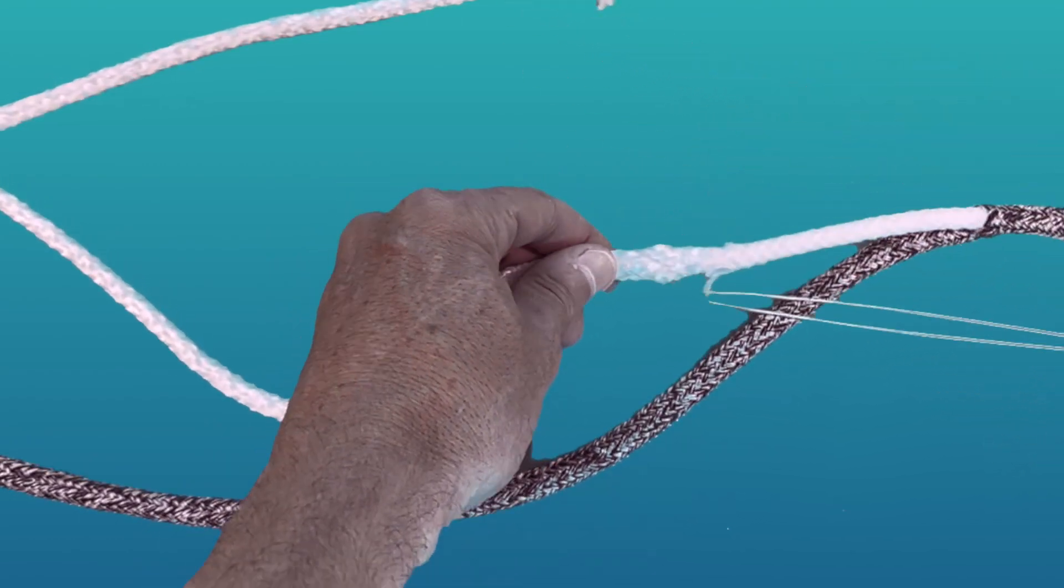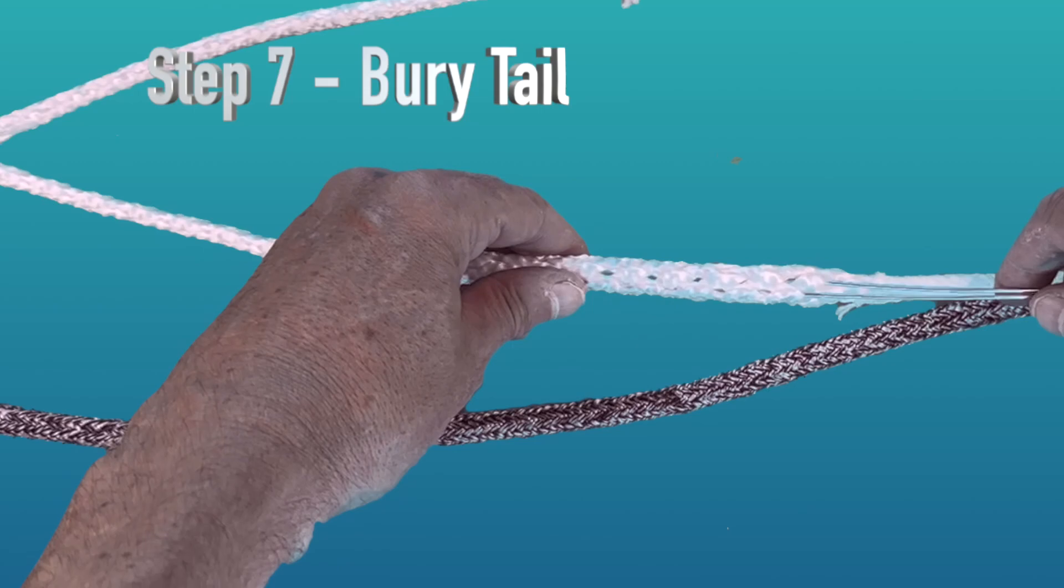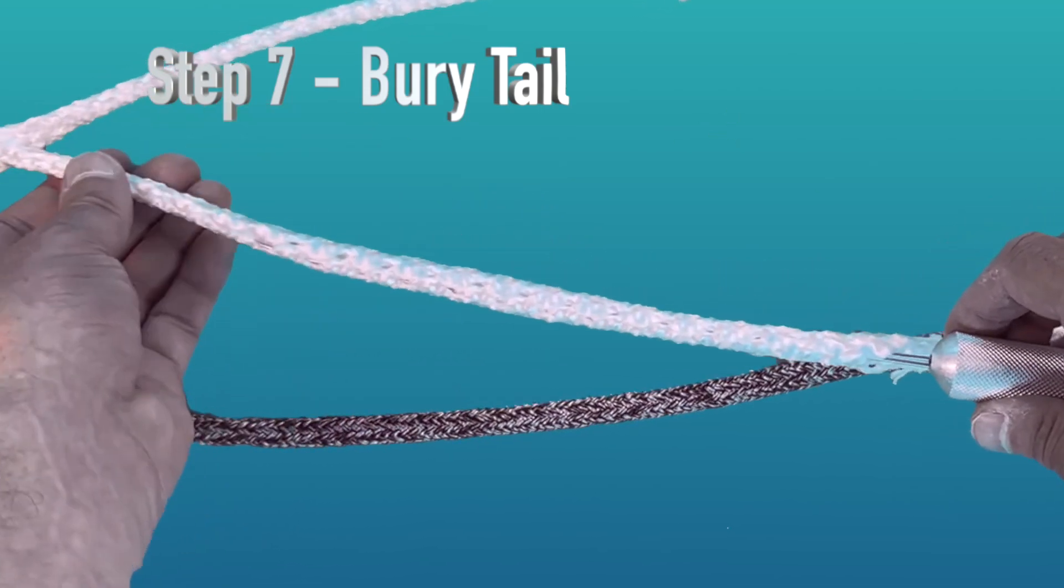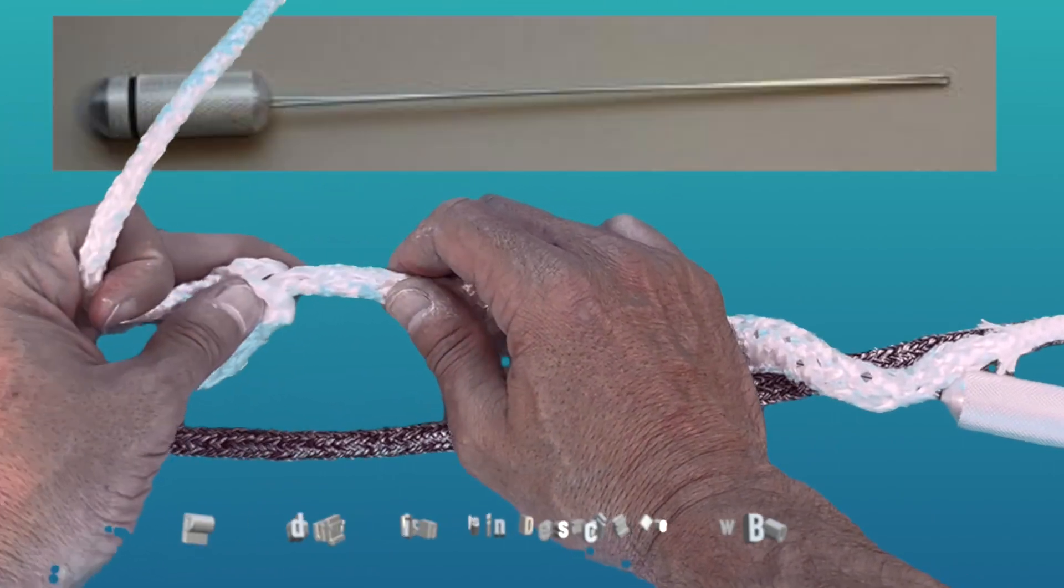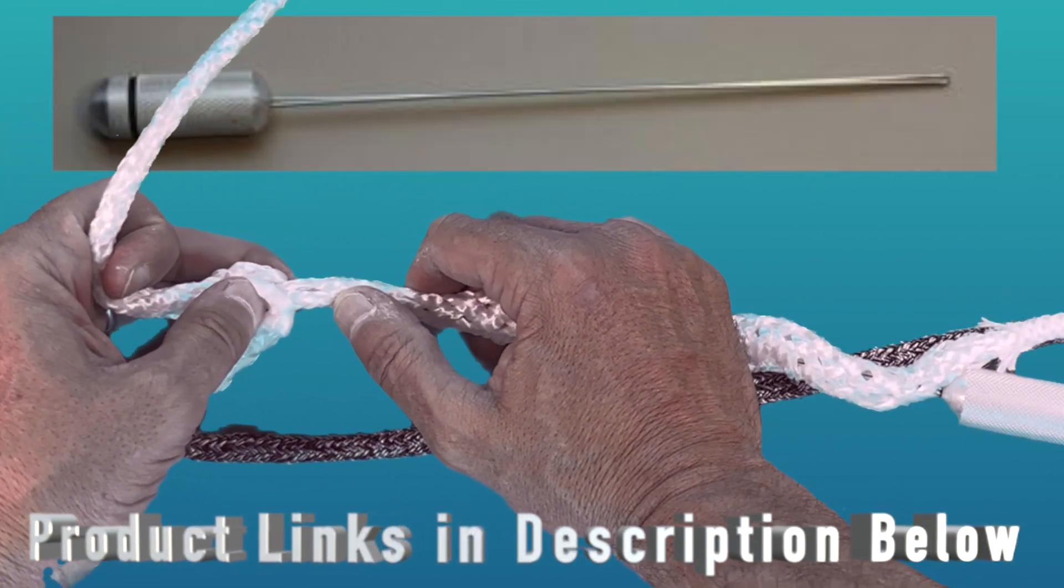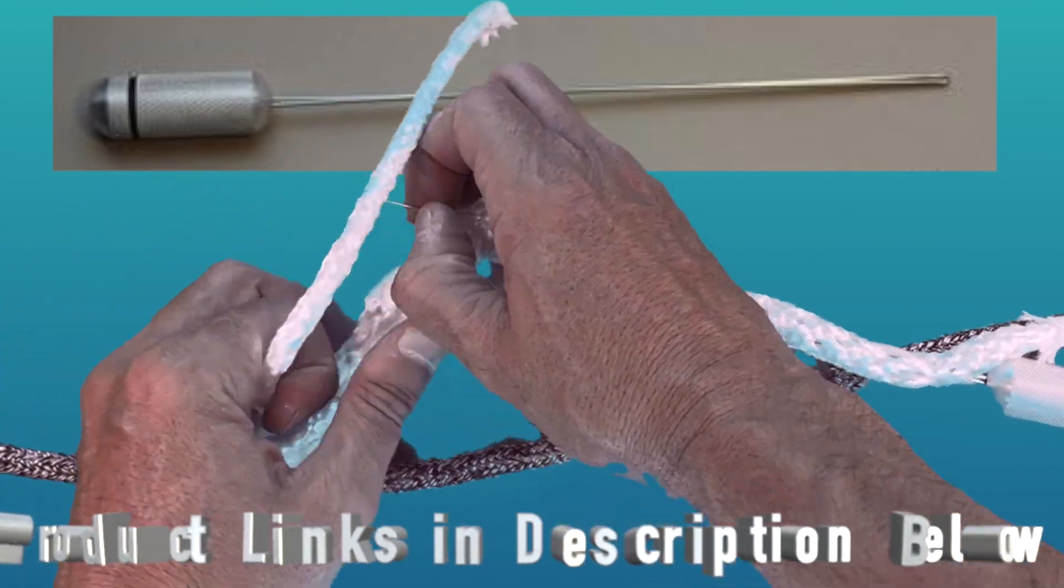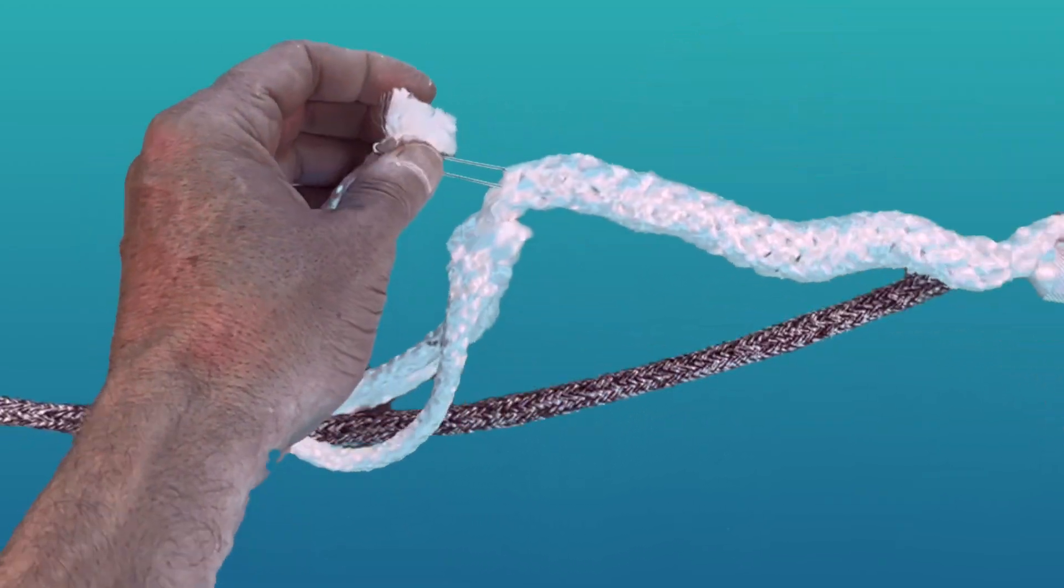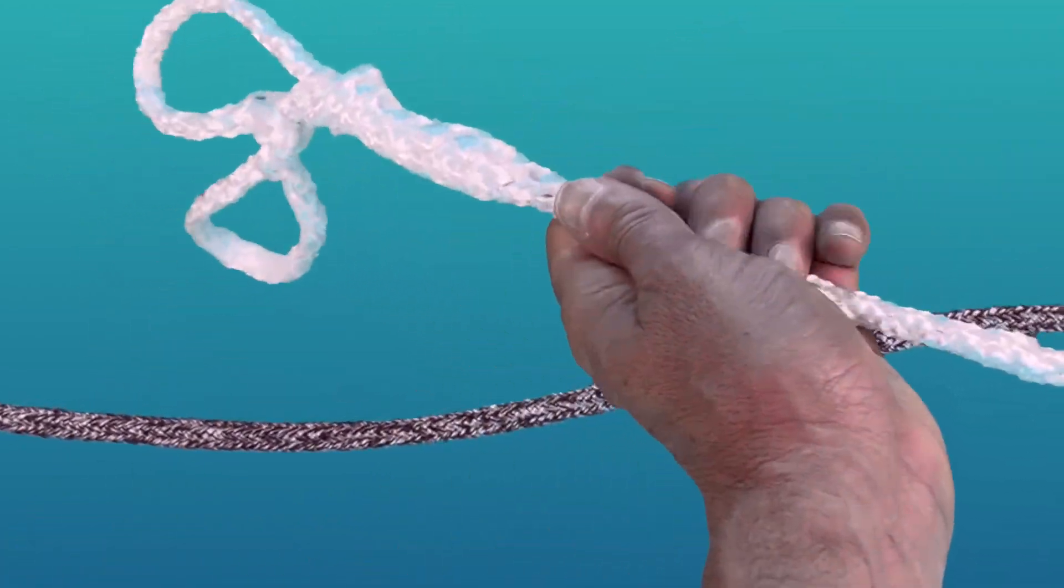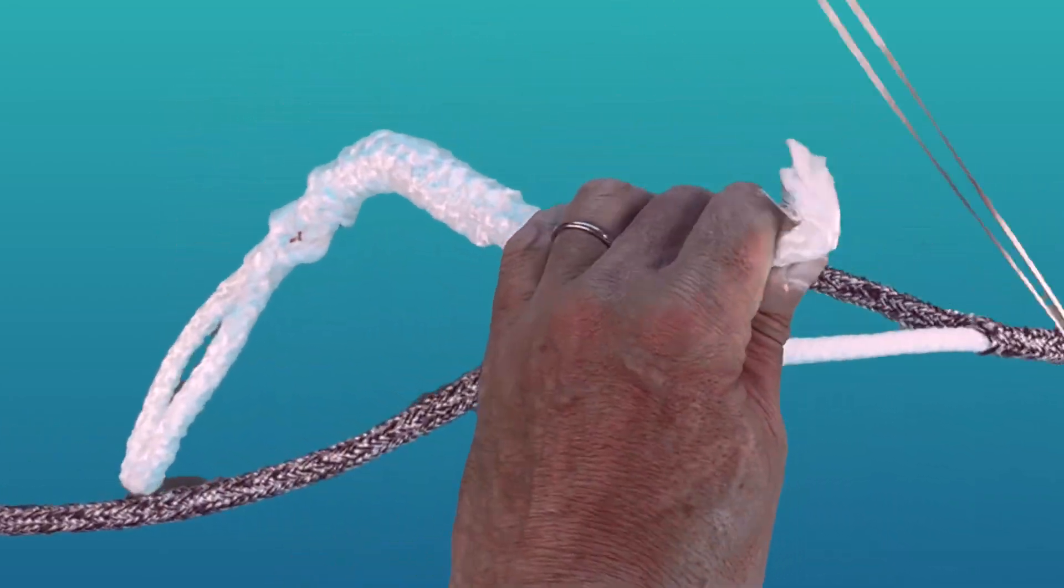For step number seven, you want to take your D splicer and take it to a point just slightly longer than where the working end would sit when running it along the main line. Slide it up through the middle, bringing it out as close to the Brommel locking splice as you can. Then take the working end of the line, pop it in the end of your D splicer and then tease it all the way through until it pops out.